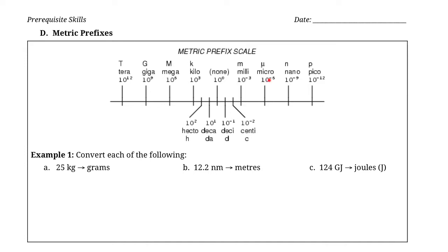Going the other way, we have micro — for example micrometers — then nanometers, and picometers, which is 10 to the negative 12. There are actually a trillion picoseconds in one second, for example.